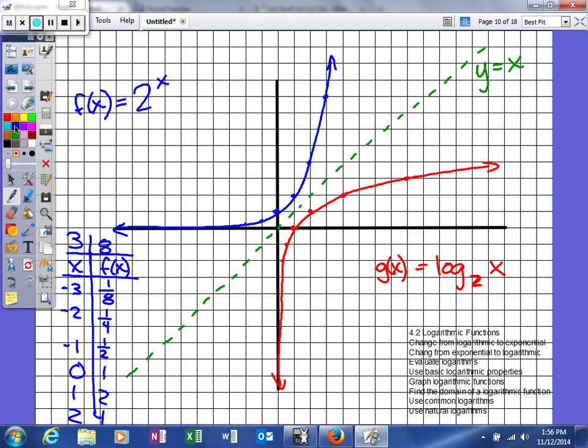Now one more thing that we need to talk about, there's some characteristics. So for instance, talking about an exponential function, we know our domain is all real numbers. Our range is going to be (0, infinity). We know that we have a horizontal asymptote at y = 0, and then also we have a y-intercept that has an ordered pair (0, 1).